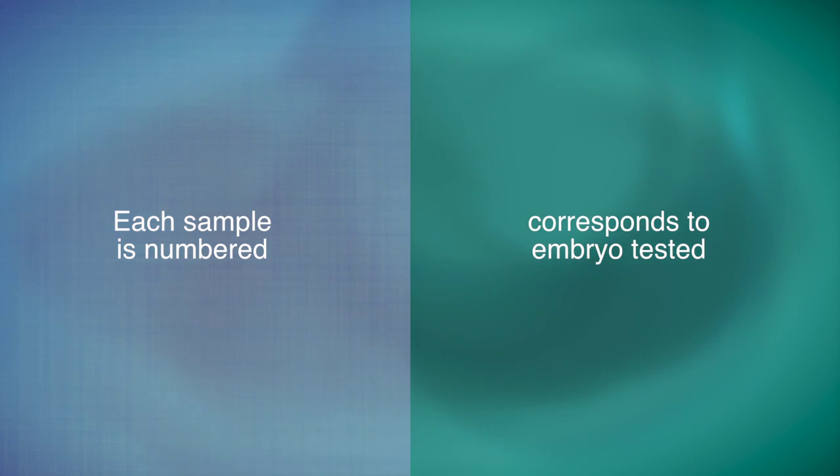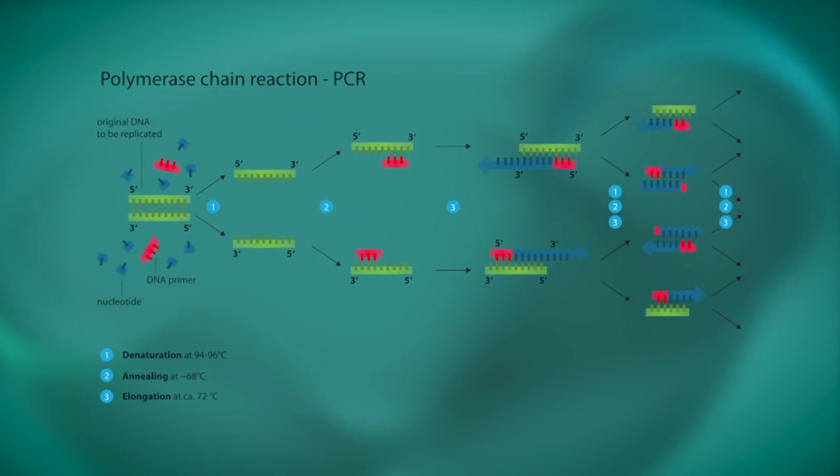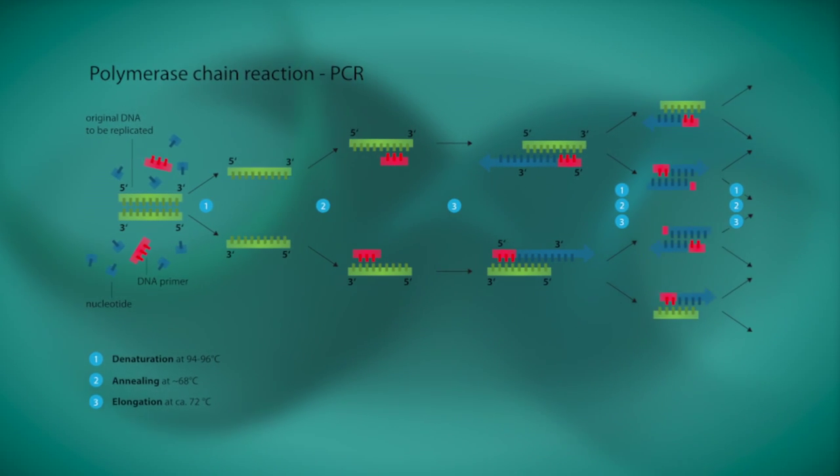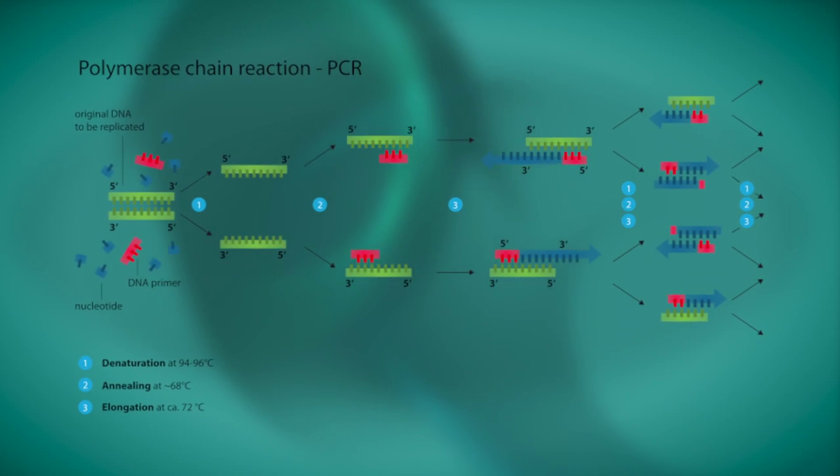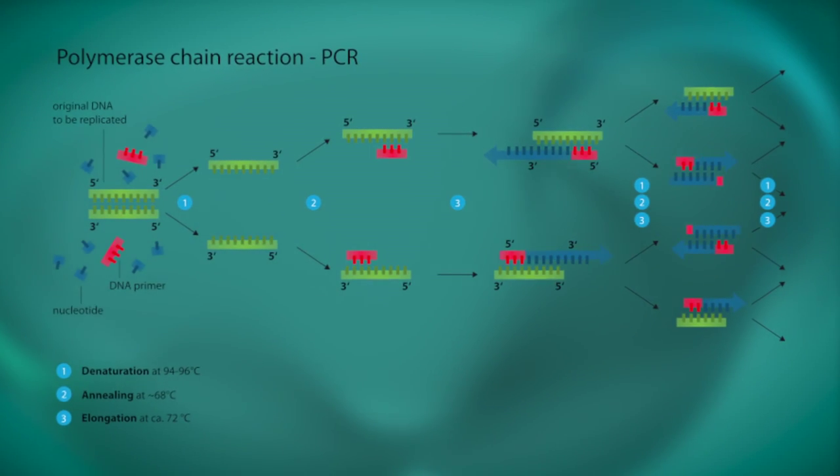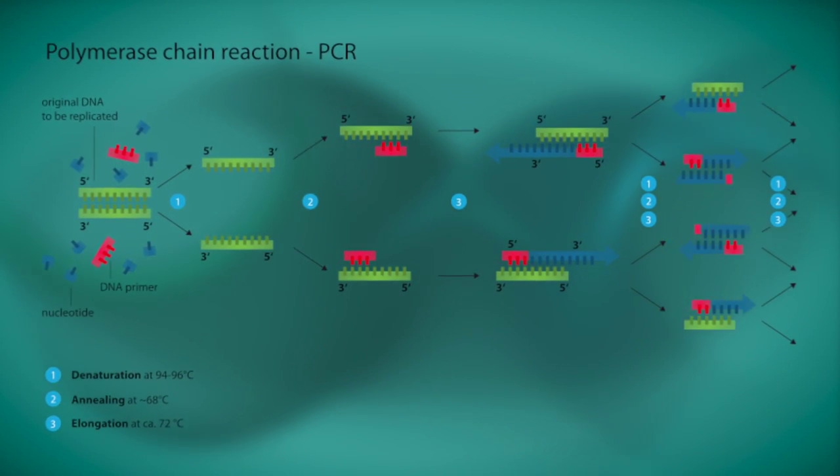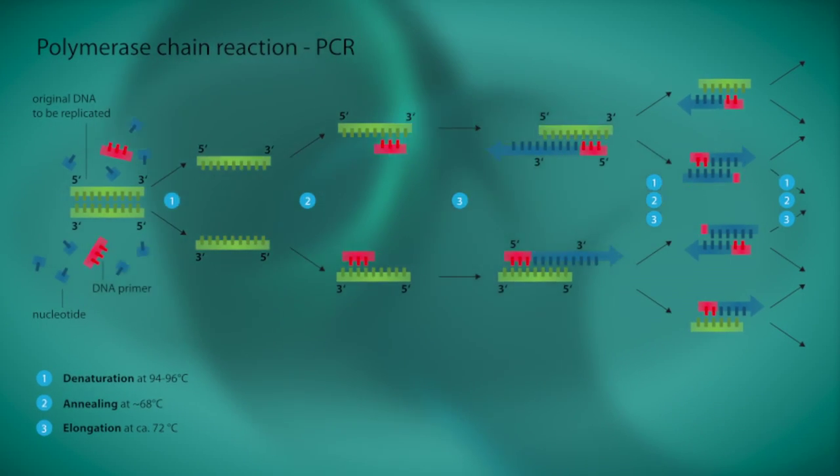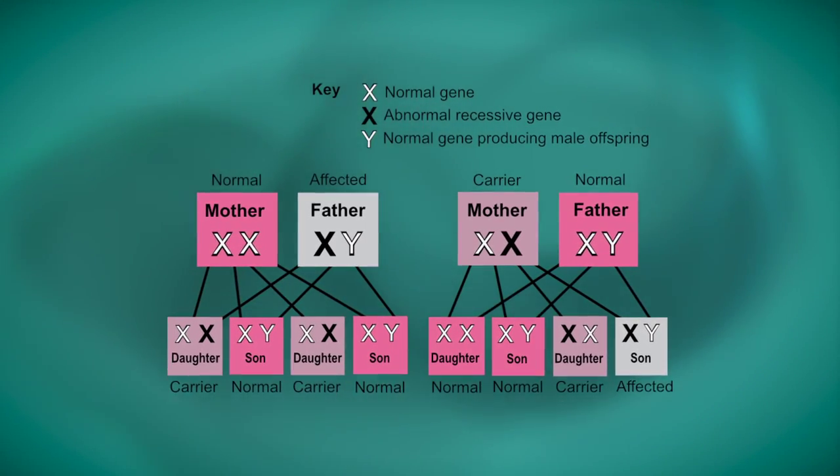For PGD, a specialized test called the Polymerase Chain Reaction, PCR, is applied to the extracted cells to determine if the embryo is affected with the particular hereditary genetic disease that both the mother and father carry on their genes.